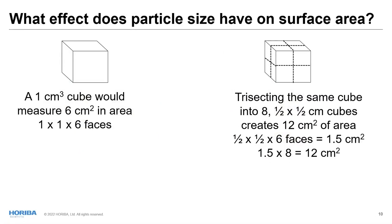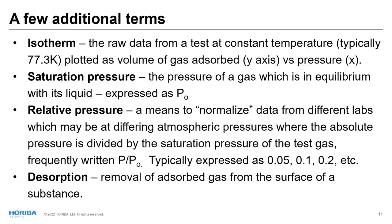What effect does particle size have on surface area? Imagine a non-porous cube one centimeter on edge — it measures 6 square centimeters. Trisecting it into eight half-centimeter cubes creates 12 square centimeters of area. Trisecting those into quarter-centimeter cubes doubles it again to 24 square centimeters. As particle size decreases, surface area increases quite substantially. The isotherm is the raw data from a test at constant temperature — typically 77.3 K for liquid nitrogen — plotted as volume of gas adsorbed on the y-axis versus pressure on the x-axis.